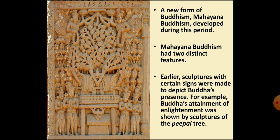During this time, a new form of Buddhism developed, known as Mahayana Buddhism. This form of Buddhism had two features which were different from the earlier form of Buddhism, the Theravada Buddhism.